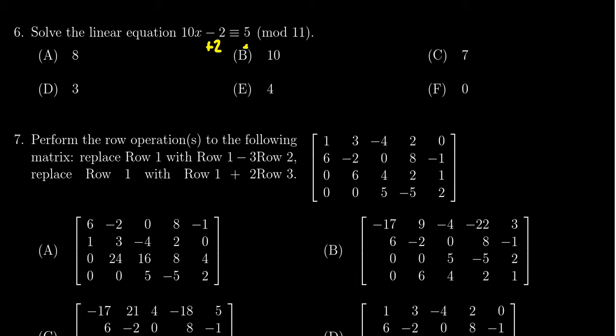I'm going to first start off by adding 2 to both sides so that the plus 2 will cancel with the negative 2 on the left hand side, leaving 10x. On the right hand side we get 5 plus 2 which is 7.